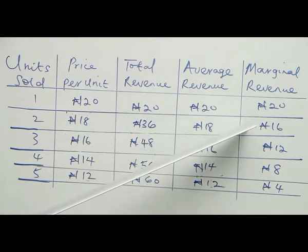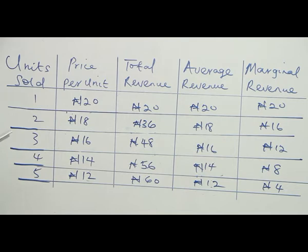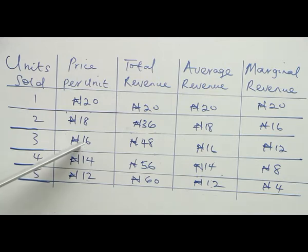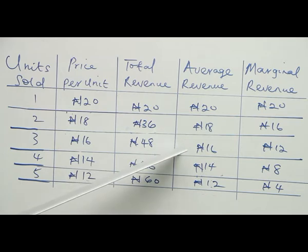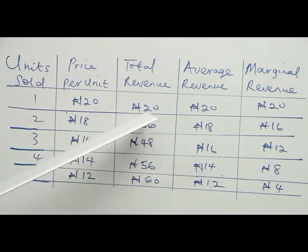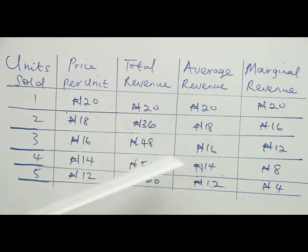The change between total revenue of 20 and 36 happens to be 16 naira — that is the marginal revenue. When three units are sold at the rate of 16 naira per unit, the total revenue is 48 naira. Average revenue is still 16, because price is always equal to average revenue. The change from 36 to 48 is 12, so marginal revenue is 12.